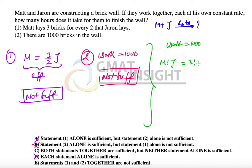Out of 1000 bricks, we know that Matt will lay 600 bricks and Jaren will lay 400 bricks. But the question asks how many hours, and there is no mention of hours anywhere in the problem.